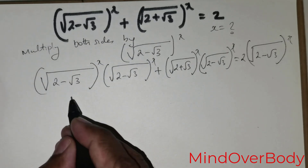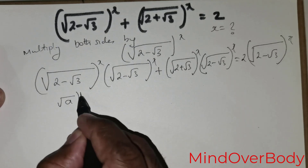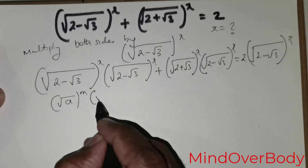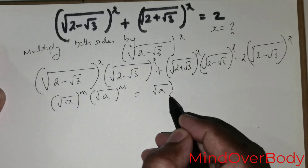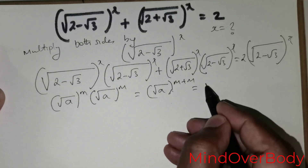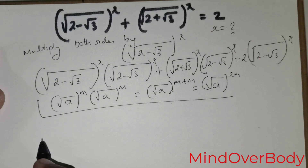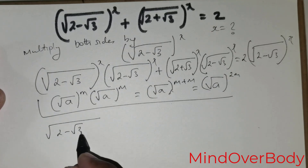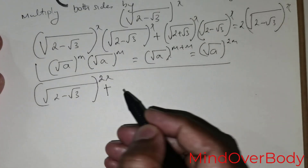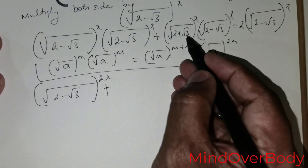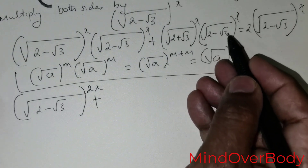Now this can be rewritten. We have root of a raised to the power m, multiplied with root of a raised to the power m — this equals root of a raised to the power (m + m), which is root of a raised to the power 2m. So the first term becomes root of (2 minus root 3) raised to the power 2x, followed by the cross term: root of (2 plus root 3) raised to the power x, multiplied with root of (2 minus root 3) raised to the power x.